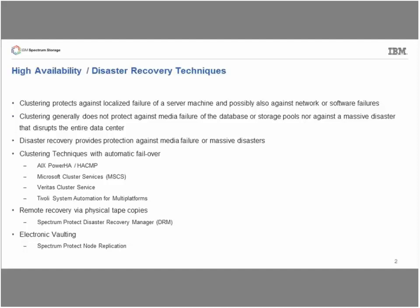Let's start by setting up some definitions. High availability is about protecting against a localized failure — a machine that fails, a network failure, or a software failure. It's what we typically call a failover, and we use clustering technologies to deal with these kinds of failures. It's not the kind of whole-building-blows-up scenario; it's more of a 'my server failed or my network failed and I need to move to some alternate hardware' using clustering technology.